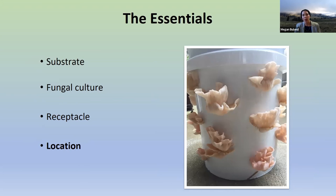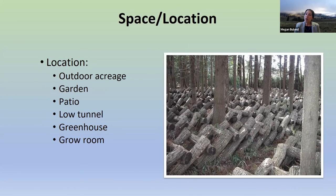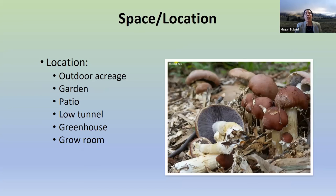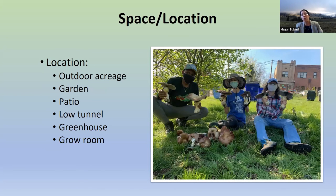Location is always important and largely a consideration of how much space is available to you. If you have outdoor acreage and a woodlot, log cultivation is a great option. Garden beds are a great method for species that grow on wood chips, like stropharia — a very beginner-friendly species. We grow stropharia with local garden groups downtown, seeding the mulch around their fruit trees, and they get beautiful stropharia mushrooms growing right out of the mulch in a very small space. They had a lot of fun with it.